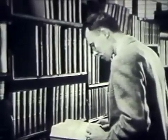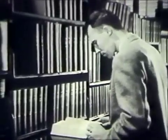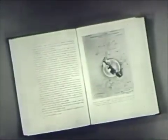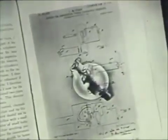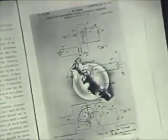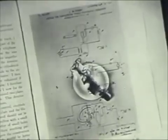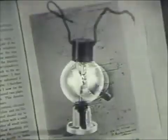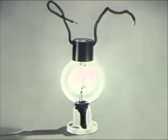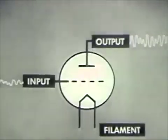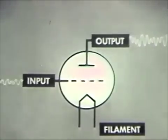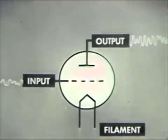The roots of the electronic age reach back into the early years of our century. In 1907, Dr. Lee de Forest discovered that a grid of fine wire placed between a filament and a metal plate in a vacuum tube could control the flow of electrons between the filament and plate, and the tube could be made to amplify as well as detect electrical waves. He called this amplifying tube an audion. Weak signals applied to the input or grid of the audion caused similar and much stronger signals to flow from the plate or output.